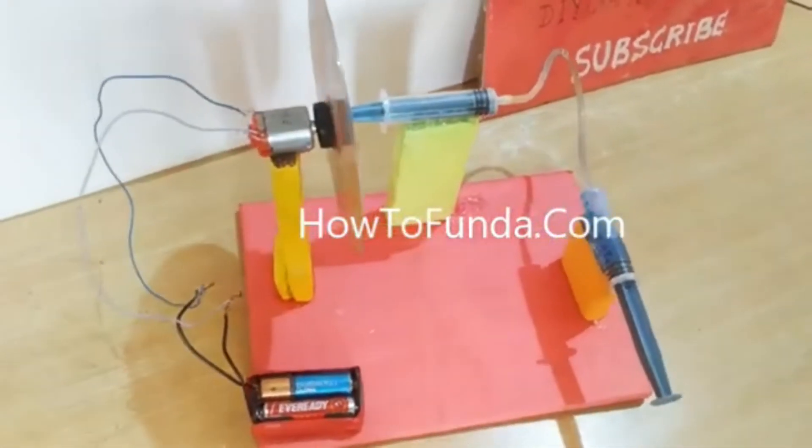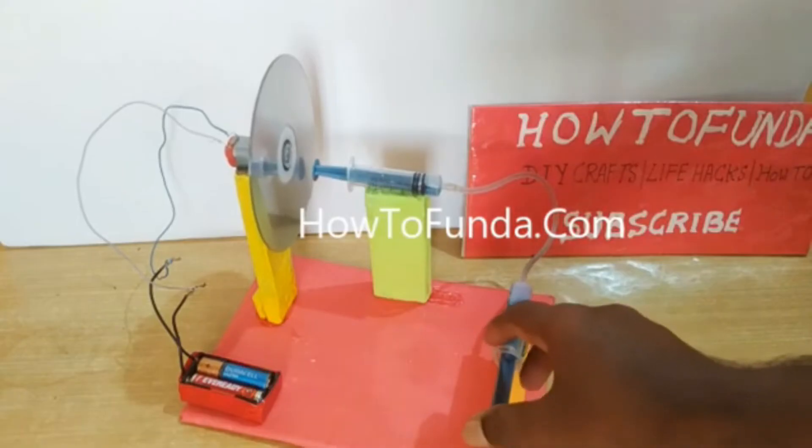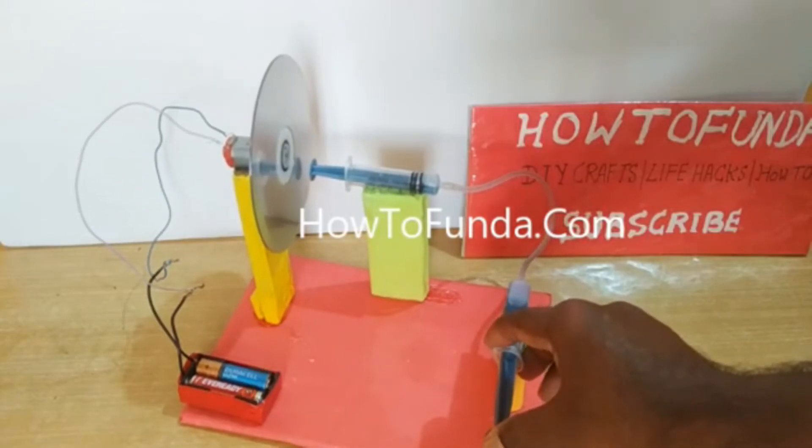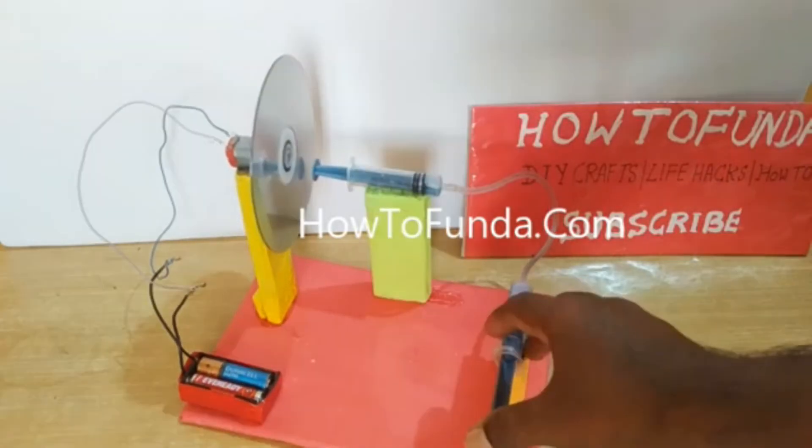Now we should apply the brake for this wheel. We will simulate applying brakes using this syringe. Whenever we push one syringe on one side, if you can see, the other syringe responds.